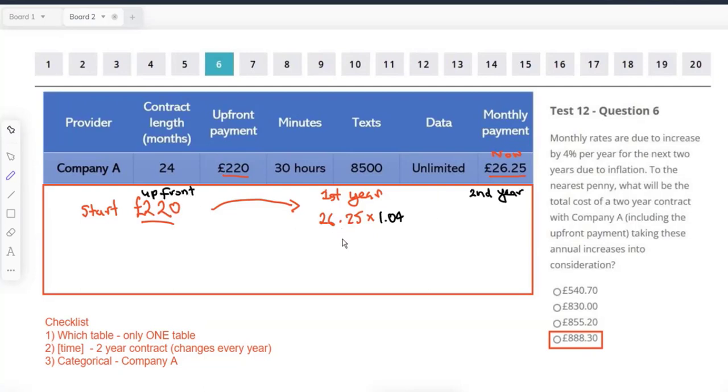Can you calculate that for me and work that out? 27.3. 27.3. That'll be £27.30 for that whole year. But remember, that's the monthly payment.